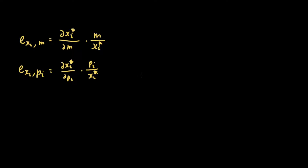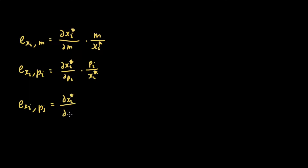The other price elasticity is the cross price elasticity, which means we're measuring how much the percent change in x sub i is as the price of the other good changes. This is denoted as e x sub i comma p sub j, equal to the partial derivative of x sub i star with respect to p sub j, multiplied by p sub j over x sub i star.